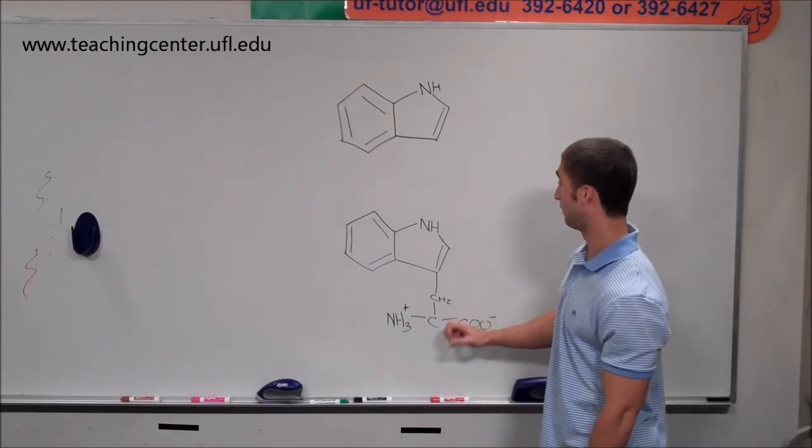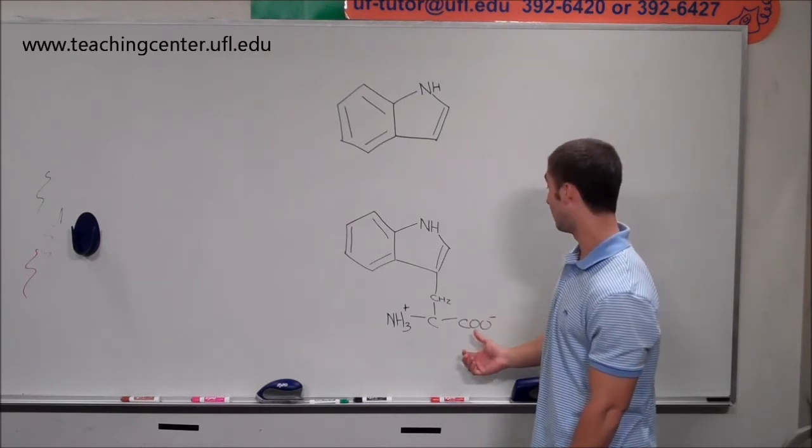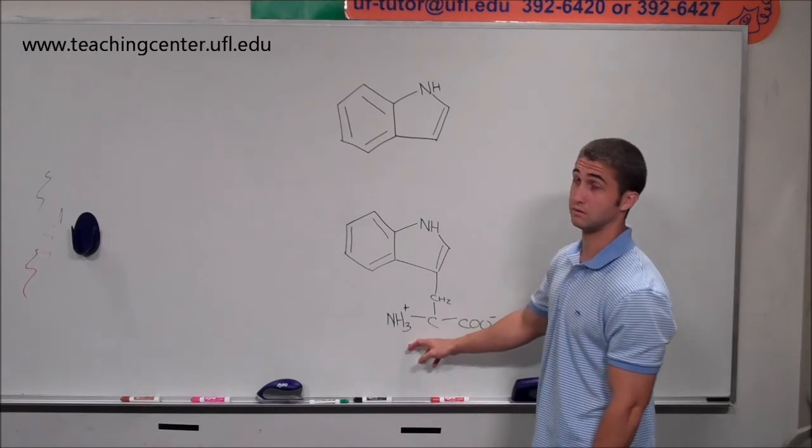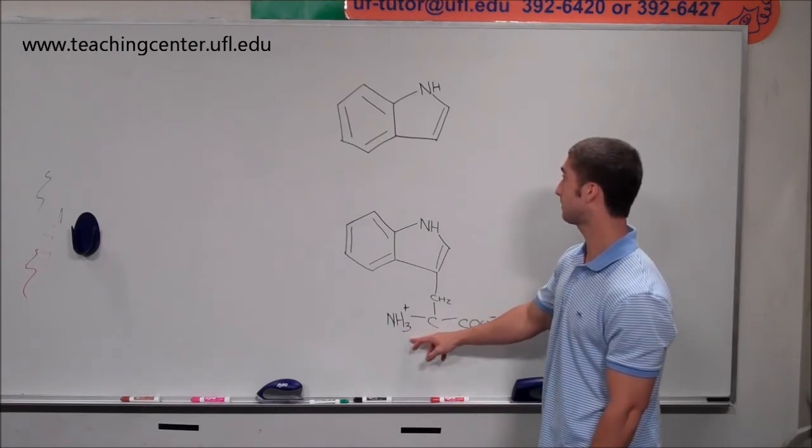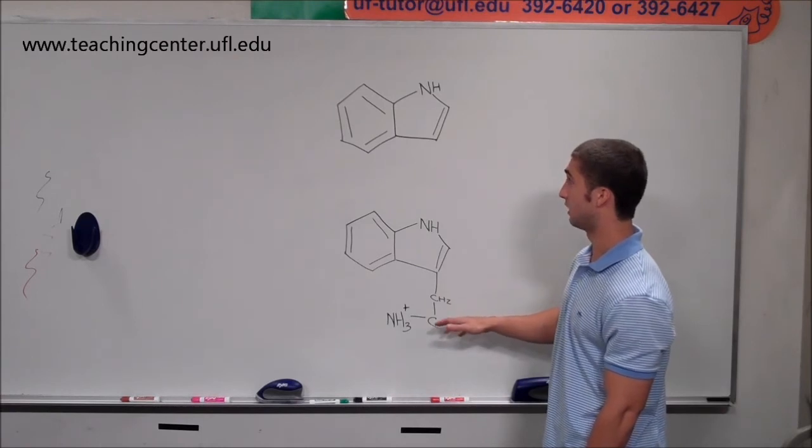It's just because at pH 7, tryptophan is going to be in a zwitterion form, which is going to have a negative charge on the carboxyl group and a positive charge on the amino group, its alpha amino group. Even though that's neutral, it's still going to have charge.